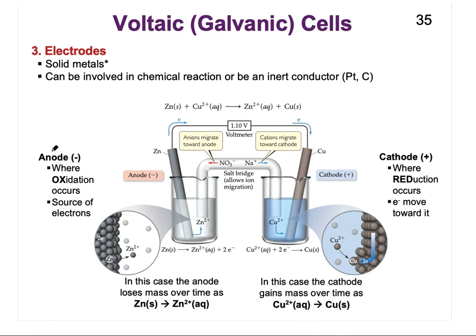The anode is negatively charged and is where the oxidation takes place — it is the source of the electrons. The cathode is positively charged and is where the reduction takes place, and electrons move toward it. The charges are easy to remember if you think about electron flow: electrons are repelled by negative charges and attracted to the positive side.